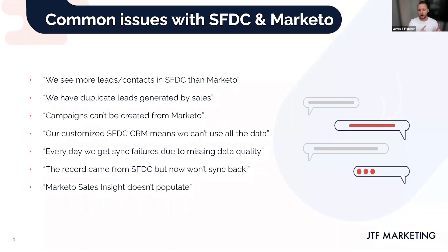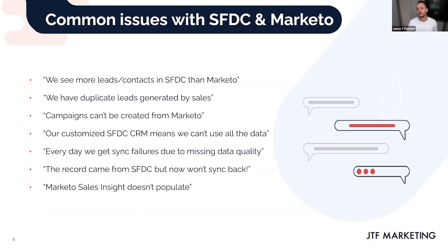Because we rely on that relationship — especially to send email — we can only really use the information in Salesforce that is linked to an individual. For example, if you have a custom object related to an opportunity, take an insurance company using a policy object attached to an opportunity representing a numerical value — unless that policy has an individual associated to it, within Marketo we can't do very much with it.